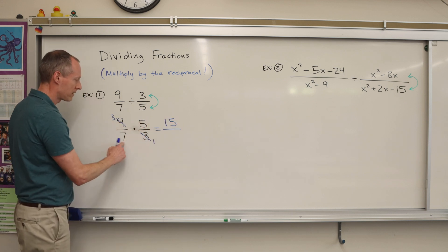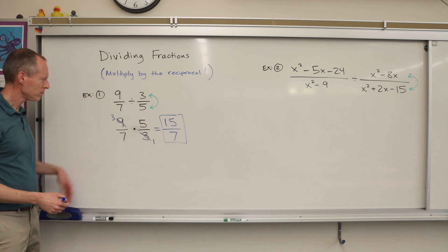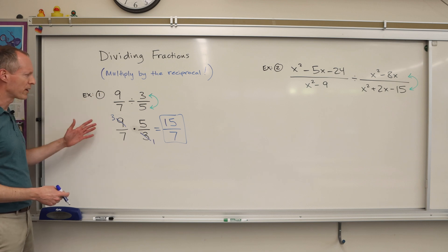Three times five, fifteen. Seven times one is seven. And there is our answer. So that was a simple problem. No variables involved.